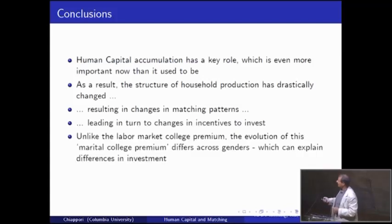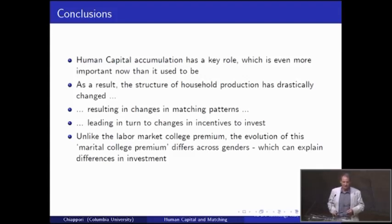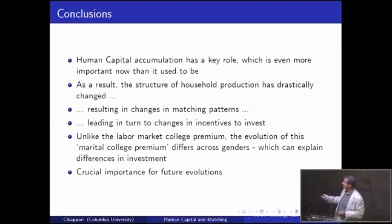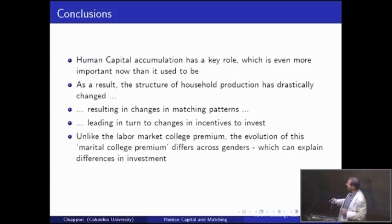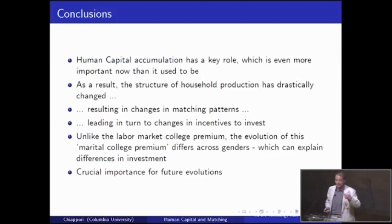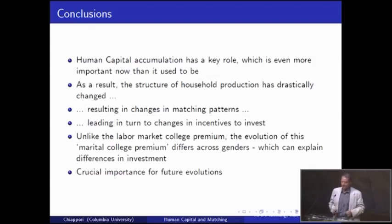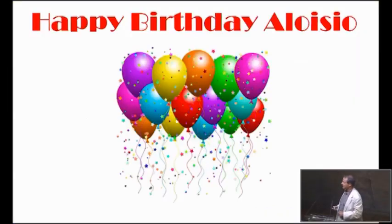Let me briefly mention the second paper, which I like a lot. It's even more ambitious: here we use panel data or pseudo-panel data in which you observe behavior — in particular labor supply — which allows you to recover utilities, and therefore the surplus, at least the economic component. So it's the same identification problem but with independent identification of the total surplus, making the identification more robust. You can structurally estimate a model of investment decisions. In conclusion: human capital accumulation plays a key role, even more important now than before. The structure of household production has changed — not only the structure itself but the respective importance of its various aspects — resulting in changes in matching patterns, which in turn led to changes in incentives to invest. Unlike the labor market college premium, what's happening on the marital side has been asymmetric across genders. And this could explain the puzzle and point toward likely trends over the next 20 to 40 years.